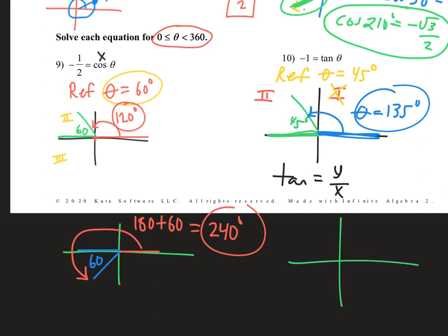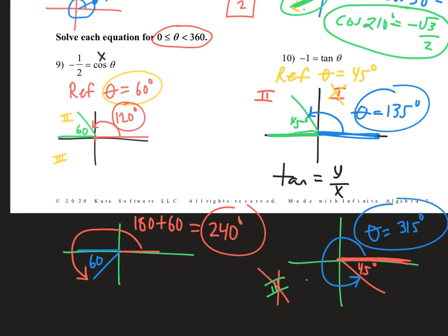What other quadrant? If we're down in quadrant 3, what's y over x? In quadrant 3 y and x are both negative, so a negative over a negative is positive — we need to be in quadrant 4. We're going to be 45 degrees shy of 360. If you're in the fourth quadrant you're going back to 360, so 360 minus 45 gets us our final answer of 315 degrees.